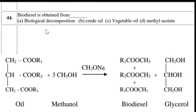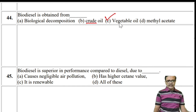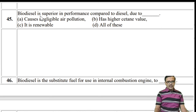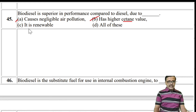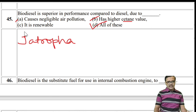Biodiesel is obtained from vegetable oil (e.g., jatropha) via transesterification with methanol. Biodiesel is superior to diesel because: it causes negligible air pollution, it has a higher cetane number (better fuel quality), and it is renewable. So all of the above is the answer.